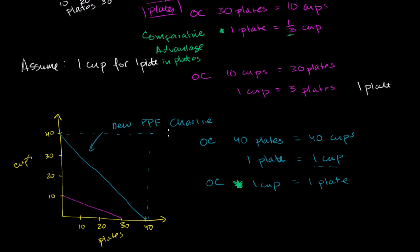So Charlie should still specialize in cups and Patty should still specialize in plates. To show they can still get an outcome beyond even Charlie's production possibilities frontier, let's think about how they could trade. Any trade that is cheaper than their opportunity cost will be a good one — assuming that neither wants only plates or only cups.